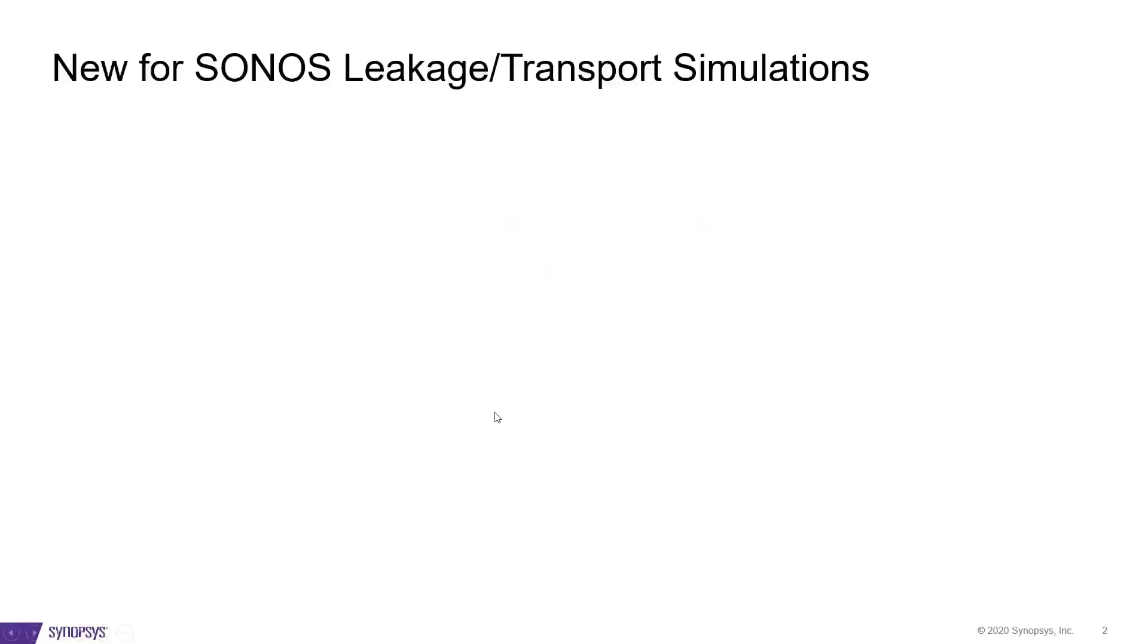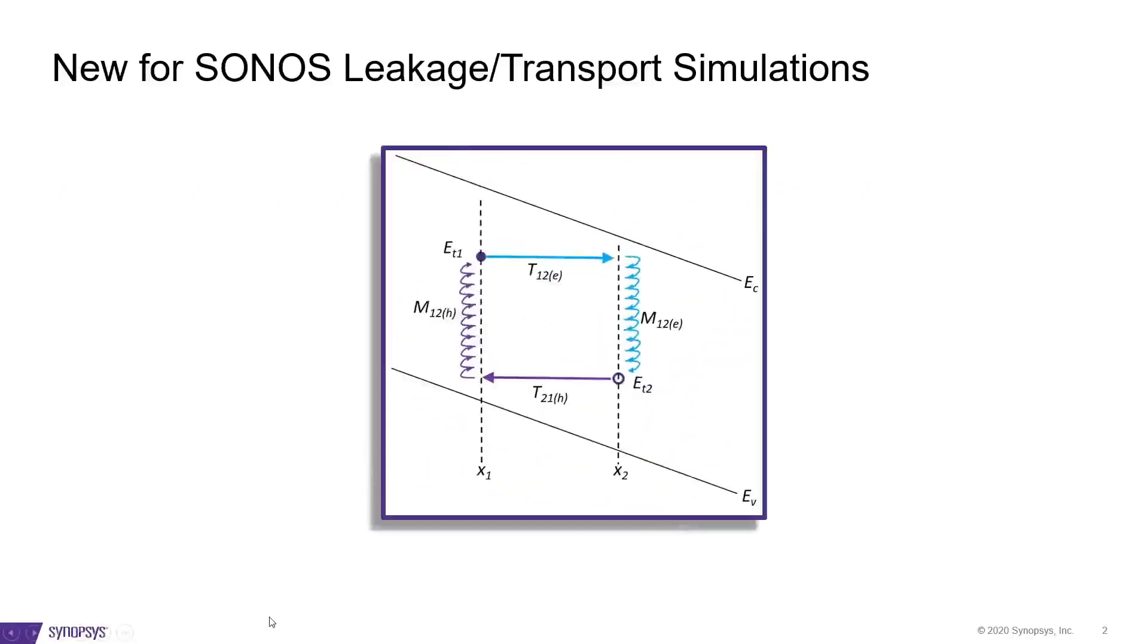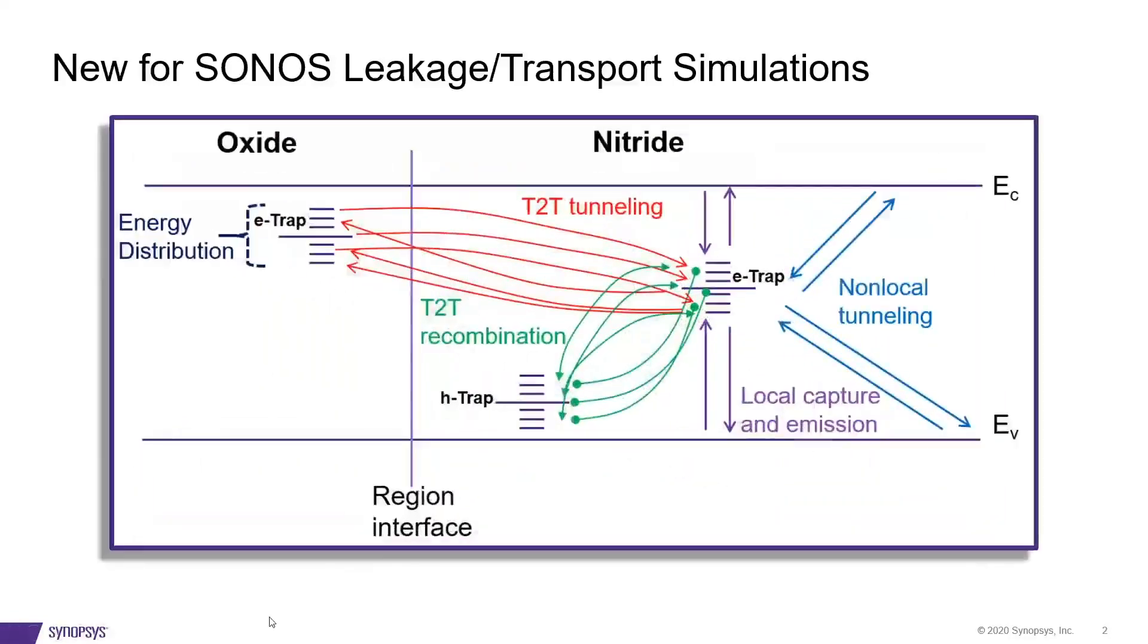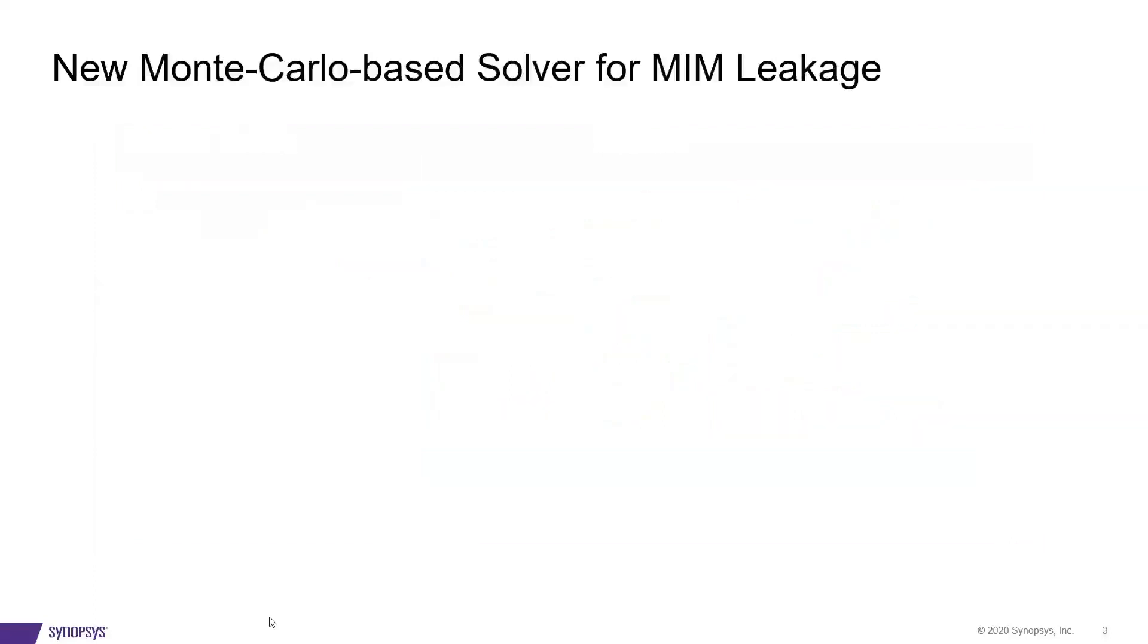New Centaurus device for Sonos with enhanced trap-to-trap transport. Now supports electron and hole trap recombination, multiple trap times per vertex, and phonon-assisted capture and emission.